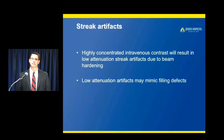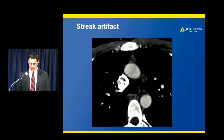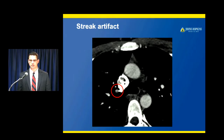First let's talk about contrast — specifically streak artifacts. We see them all the time on a day-to-day basis. They happen because highly concentrated intravenous contrast results in low attenuation artifacts due to beam hardening effects, and these artifacts can mimic filling defects. In the right chest, we have this low attenuation focus in the middle of the pulmonary artery, right next to a very high attenuation superior vena cava containing contrast. This looks just like a pulmonary embolism and certainly could be mistaken for it.